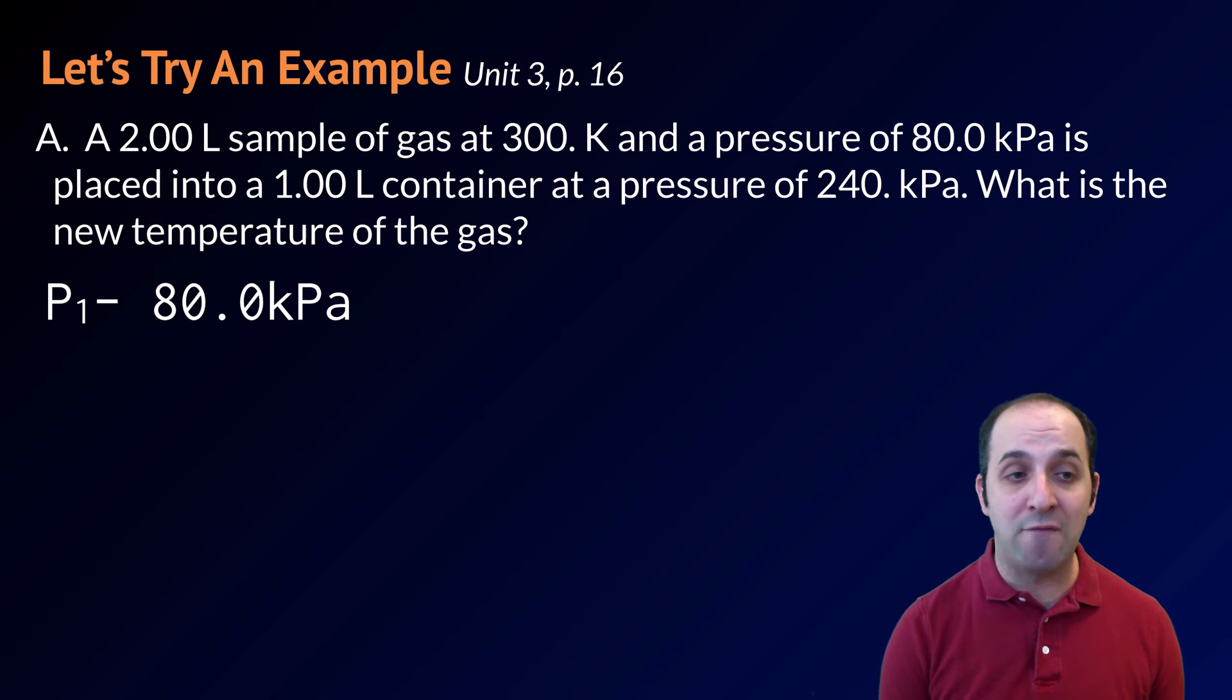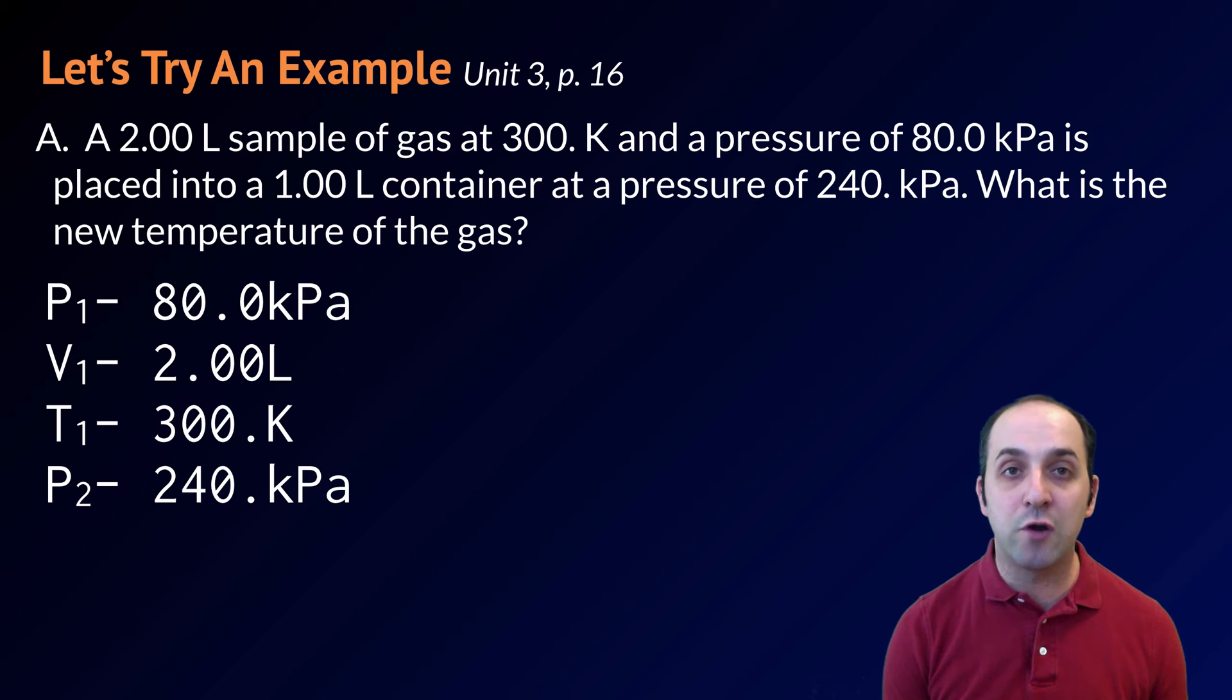So, step one, I'm going to pull out my variables. The initial pressure is 80 kilopascals. The initial volume is 2 liters. The initial temperature is 300 degrees Kelvin. The final pressure is 240 kilopascals. The final volume is 1 liter, and the final temperature is unknown.